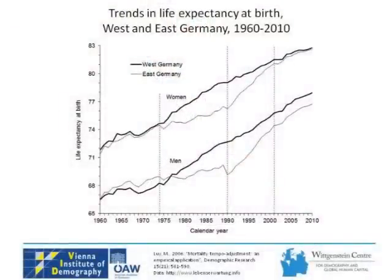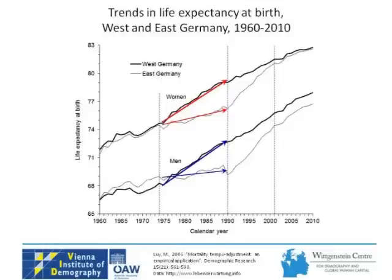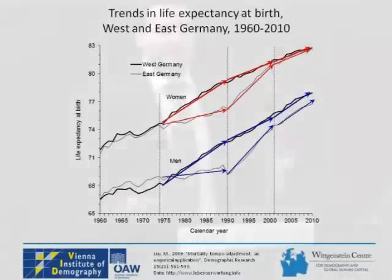This is strictly period data. Thinking about tempo effects: in the years when the gap was widening, life expectancy in the West was increasing much more strongly, while in the East there was almost no change - above all among men. Then the trends reversed: the increase slowed in the West but was very strong in the East, followed in recent years by roughly parallel development. This suggests that what we observe could be heavily impacted by what Bongaarts and Feeney call tempo effects.